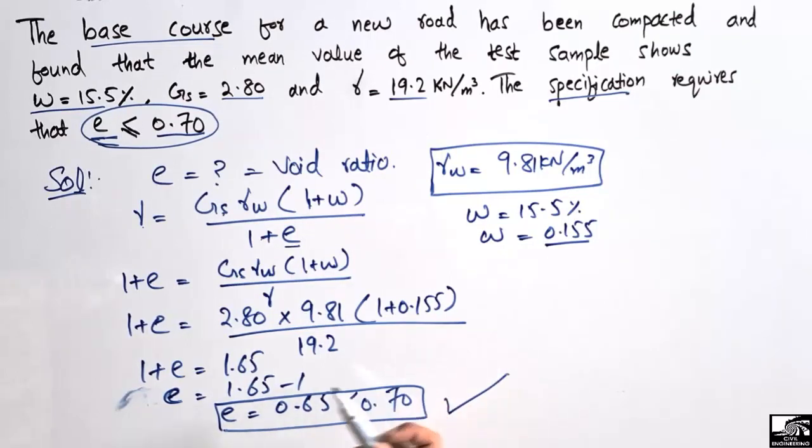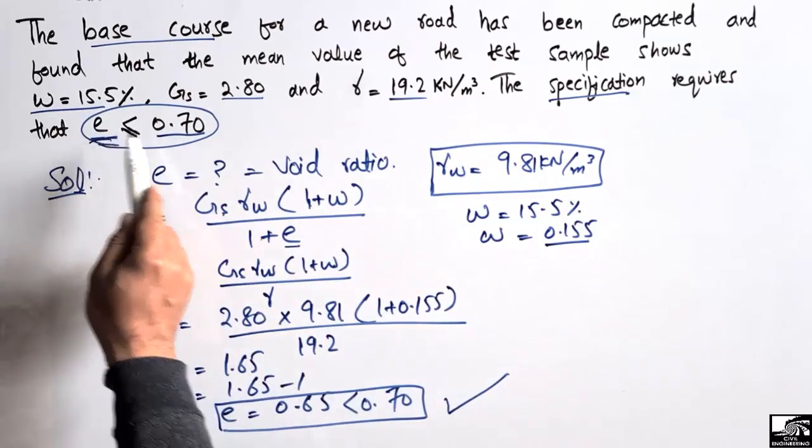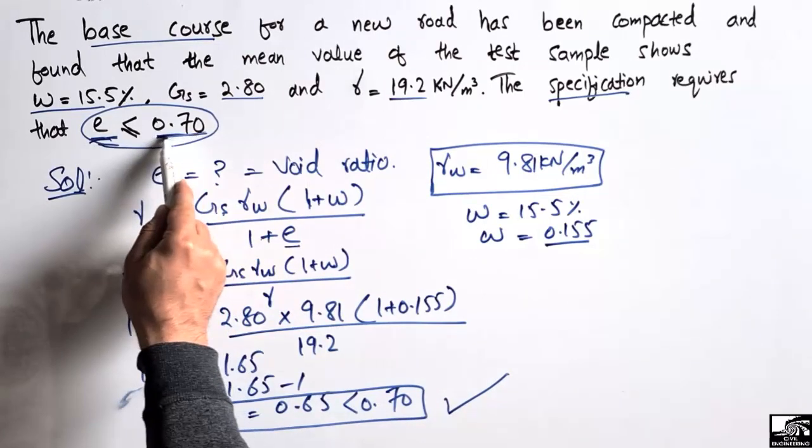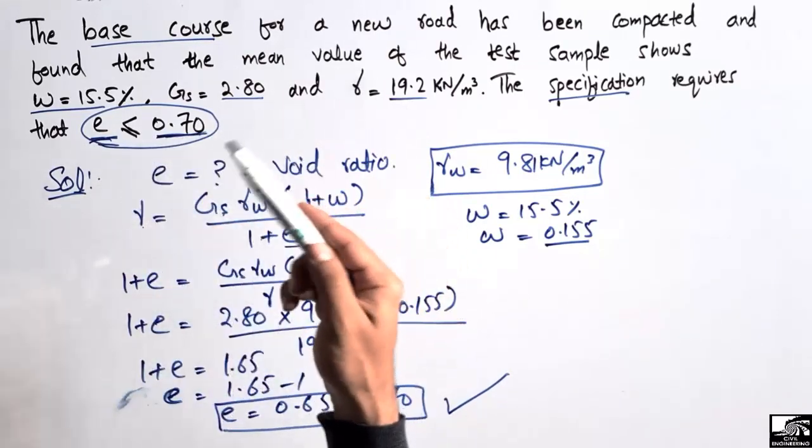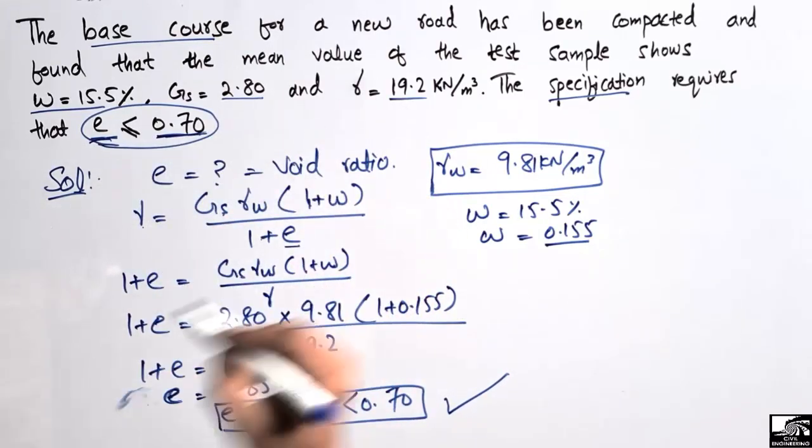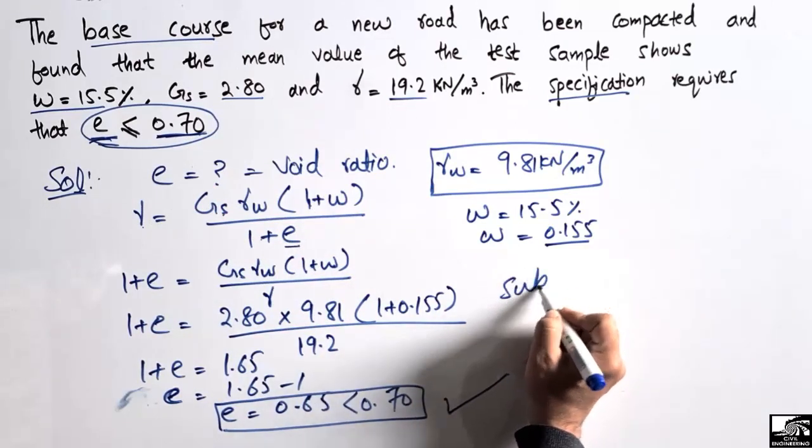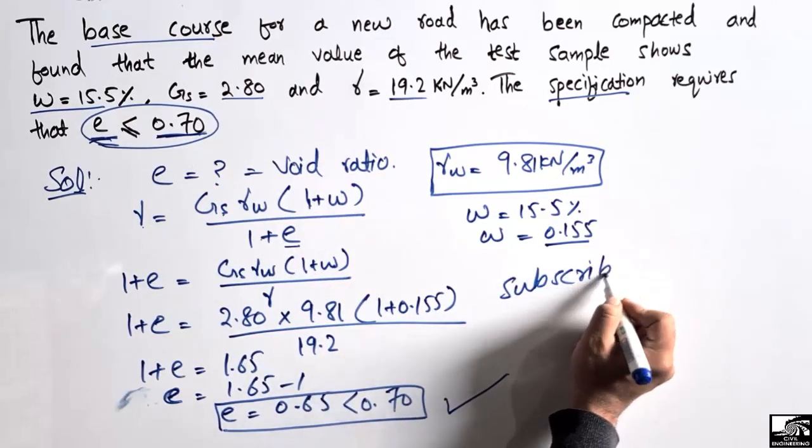Hope you guys understand how we can find the void ratio and how it should be related to the specification given to us. In this case it is 0.70, while it may vary depending on the designer. Hope you guys understand and don't forget to subscribe our channel. Thank you for watching our video.